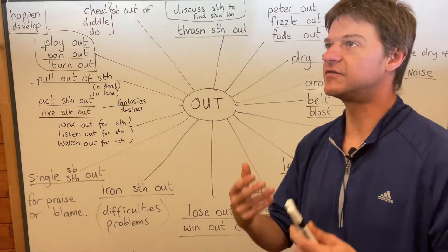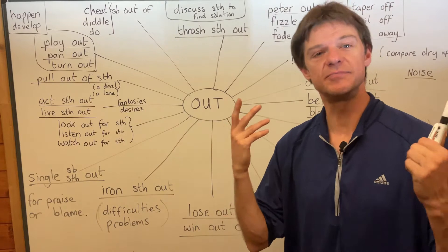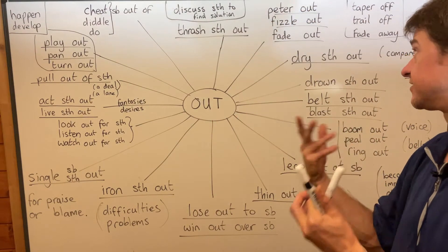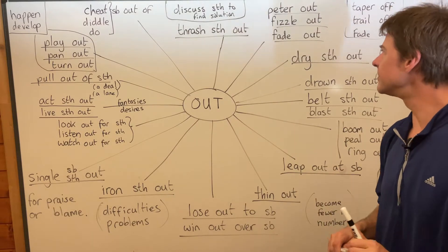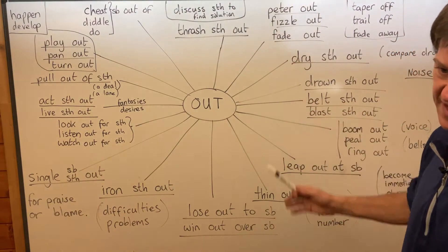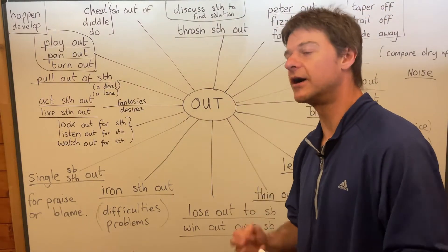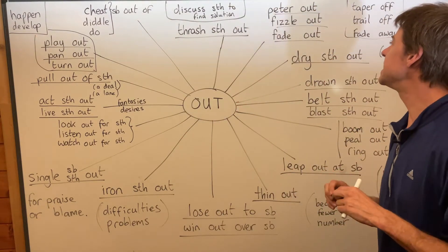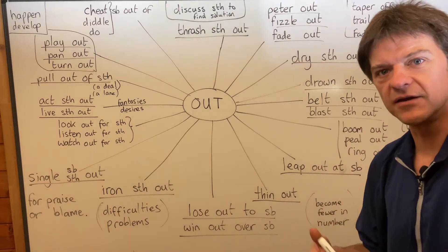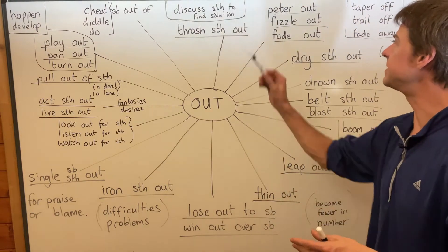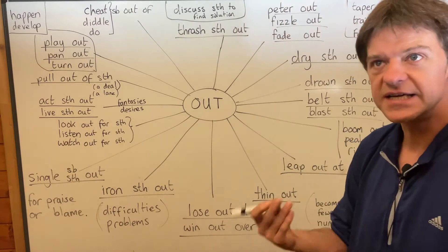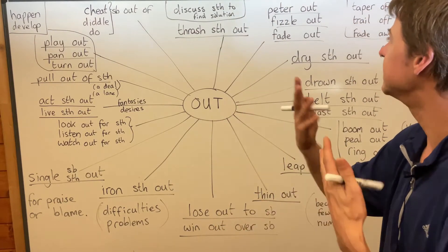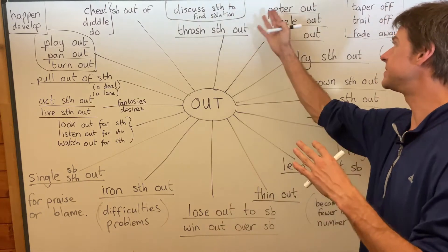All three of these mean to gradually weaken and then stop or disappear. So if somebody's voice fades out, it gets quieter and quieter and then disappears — you can't hear it anymore. If you're following a trail of footprints in the snow and they peter out, they gradually disappear — perhaps it's been snowing on top of the footprints and so you can't see them anymore. They peter out.